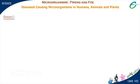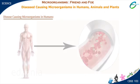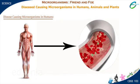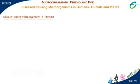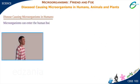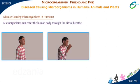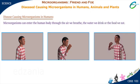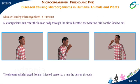Disease-causing microorganisms in humans: Pathogens enter the human body in various ways. They can enter through the air we breathe, the water we drink, or the food we eat. The diseases which spread from an infected person to a healthy person through air, water, food, or physical contact are called communicable diseases.